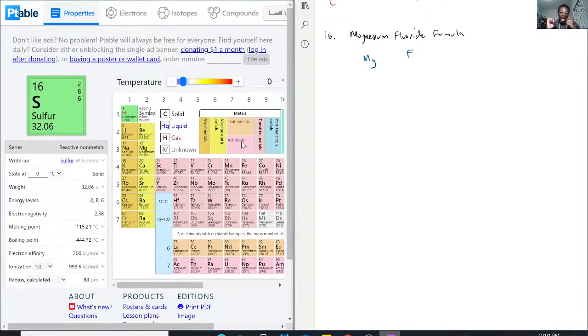So magnesium has positive 2 as its ion because it's on the second column and usually just gets rid of 2 electrons in order to achieve its noble gas state.